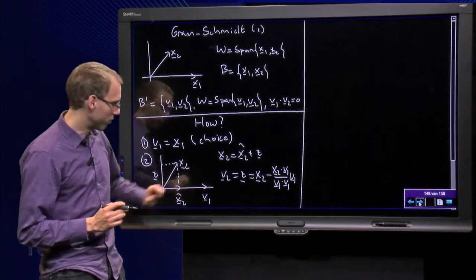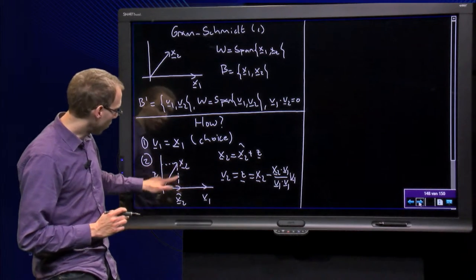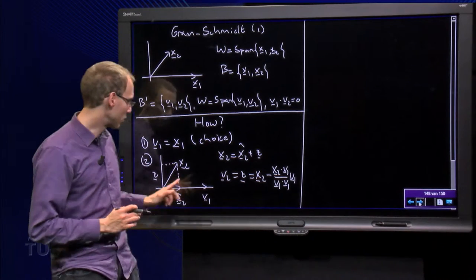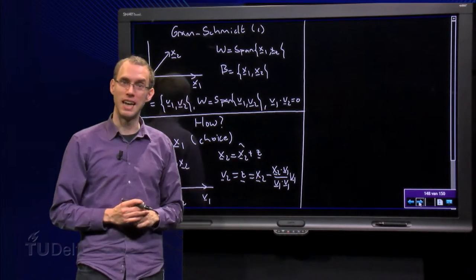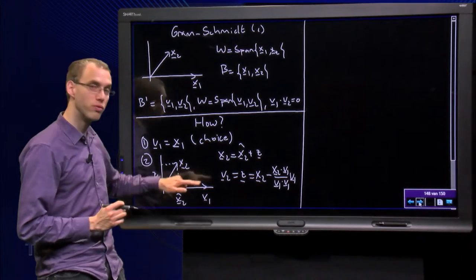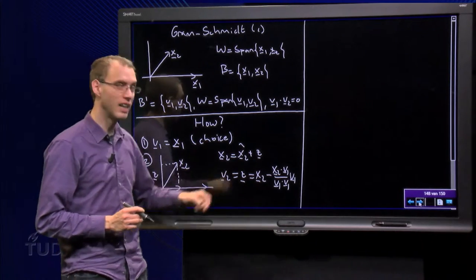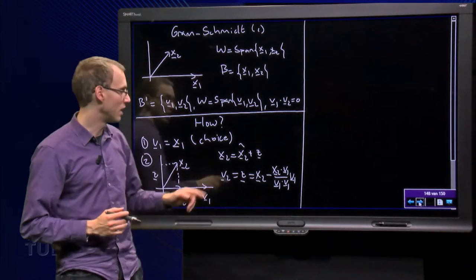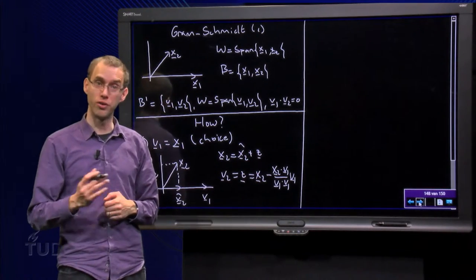Here we have our v1 and here our x2. Now we compute the projection of x2 on v1, x2 hat, and then we have x2 equals x2 hat plus z. But this z vector over here is orthogonal to v1, so as our v2 we choose z, so we have v2 equals z, and we know how to compute z, it equals x2 minus the projection of x2 on v1.